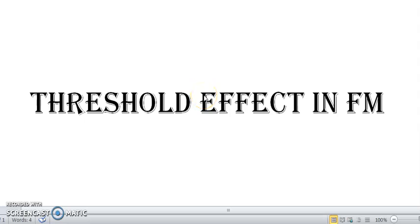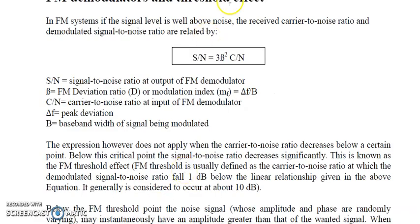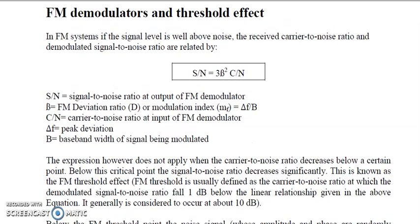After the study of channel nonlinearity in frequency modulation systems, we are going to study the threshold effect in FM. The threshold effect in FM occurs when the signal level in the FM demodulator is better than the noise level.